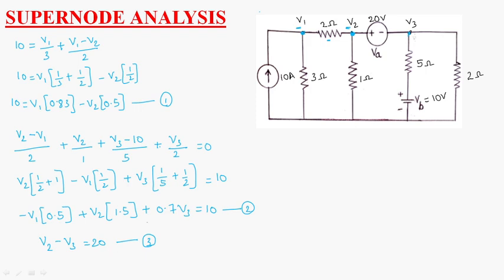On solving these three equations we get: V1 equals minus 21.5, V2 equals minus 15.8, and V3 equals 4.18. This is about supernode analysis. Thank you.